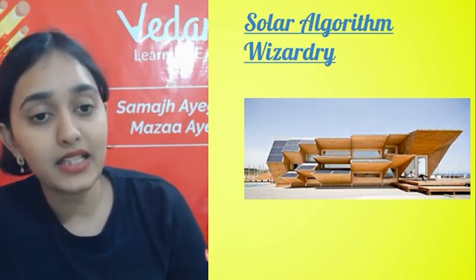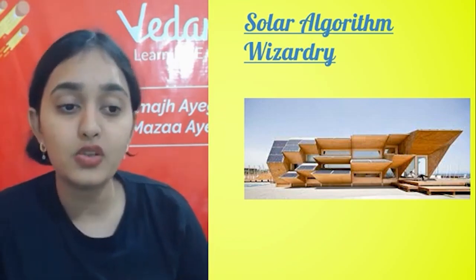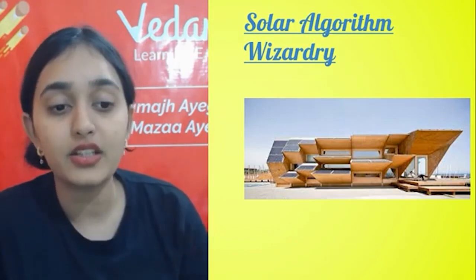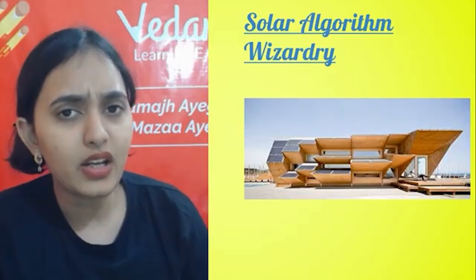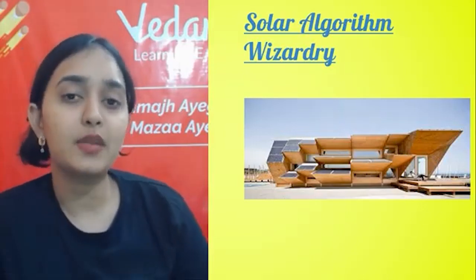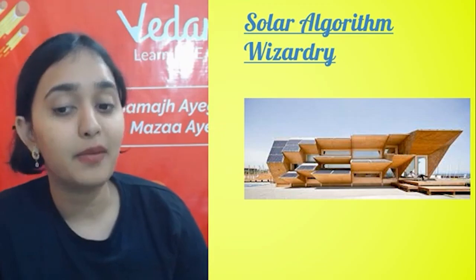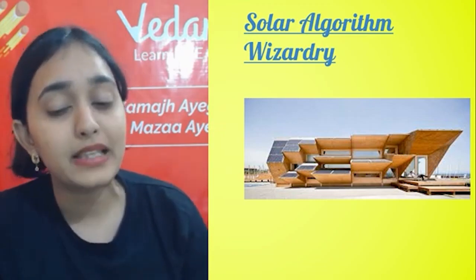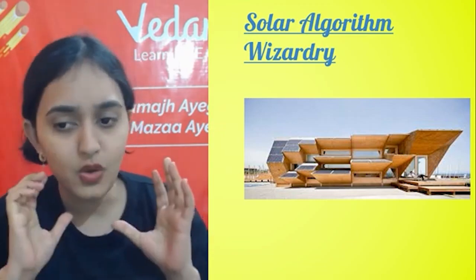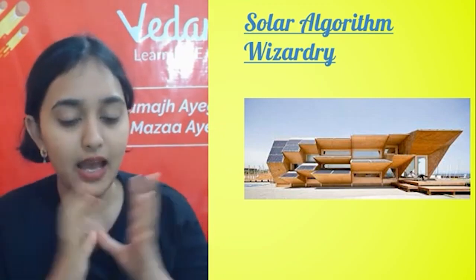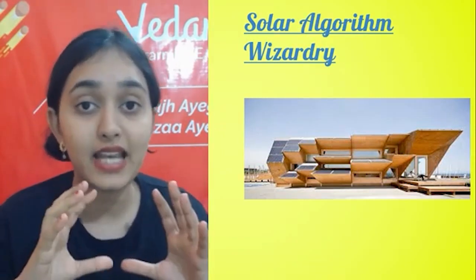The next one is the Solar Algorithm Tower. This building used mathematical algorithms to alter the cubic building's geometry based on solar inclination and the structure's proposed orientation. The algorithm can be used to create the perfect building for any location with the right computer program. It was programmed so that its solar panels could change orientation based on location to get maximum solar energy.